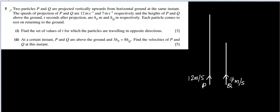This is question number 5. Particle P is thrown up with an initial velocity of 12 meters per second and particle Q with 7 meters per second. The deceleration is 10 meters per second squared downwards, so we write it as minus 10 because it is opposite to the motion — we have considered upwards as positive and downwards as negative.